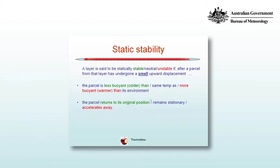So a layer is said to be statically stable, neutral, or unstable if after a parcel from that layer has undergone a small upward displacement the parcel is less buoyant — cooler than its environment, which means it's stable — at the same temperature as the environment, which means it's neutral — or more buoyant, that is warmer than its environment, which means it's unstable. The parcel returns to its original position if it's stable, remains stationary if it's at the same temperature as its environment, or accelerates away if it's more buoyant than its environment.